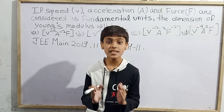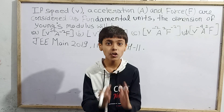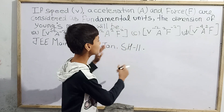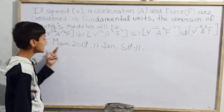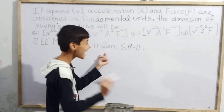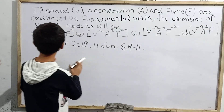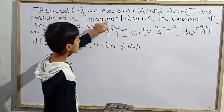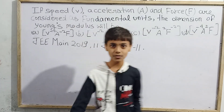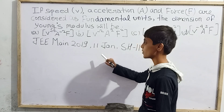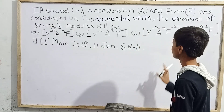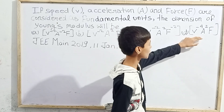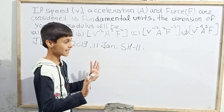Hello, this is Sarim Khan. I am not trying to teach anyone but attempting these JEE equations myself. Today I am going to attempt one more question from JEE Main 2019, asked on 11 January in the second shift. The question asks: if speed v, acceleration a, and force f are taken as fundamental units, what will be the dimensions of Young's modulus? The options are: (1) v⁻⁴ a⁻² f, (2) v⁻² a² f², (3) v⁻² a² f⁻², and (4) v⁻⁴ a² f.